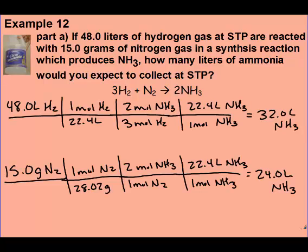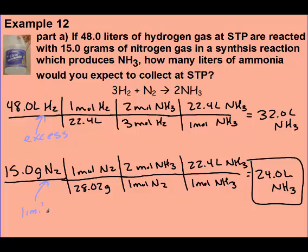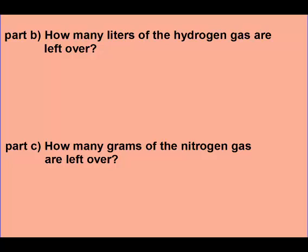You should have converted both amounts to liters of ammonia. We got 32 liters of ammonia from hydrogen and 24 liters of ammonia from nitrogen. So the smaller amount gives us part A: 24 liters of NH₃. Make sure that you're labeling your limiting and excess reactants. Hydrogen was excess and nitrogen was limiting.